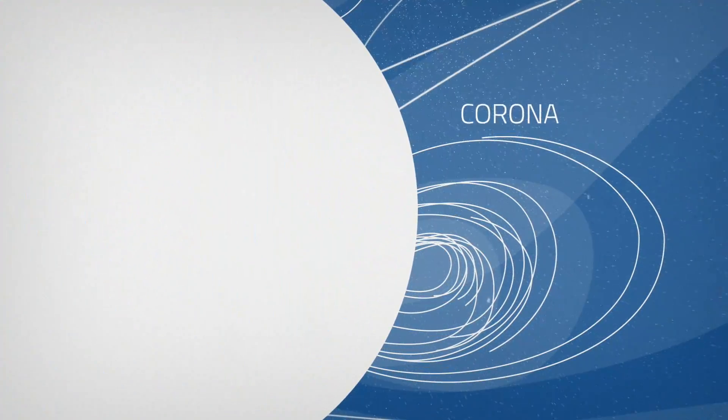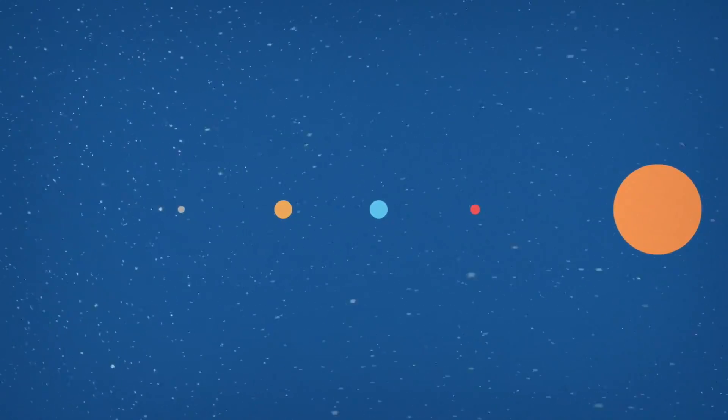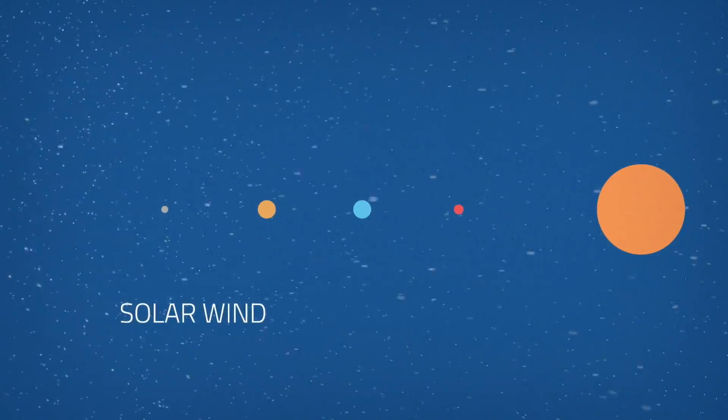We call the Sun's atmosphere the corona. The steady breeze of particles flowing out from the Sun and filling the space between the planets is the solar wind.